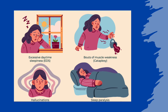Cataplexy is important because it helps classify the types of narcolepsy: narcolepsy with cataplexy is called type 1, whereas narcolepsy without is called type 2. Around 75% of people with narcolepsy experience cataplexy, making type 1 far more common. Cataplexy typically doesn't develop until months or years after the first signs of narcolepsy, such as excessive daytime sleepiness, but in rare cases it can be the first observed symptom. When cataplexy is present, it is almost a guaranteed diagnosis of narcolepsy, as it is extremely rare for it to be an isolated symptom.